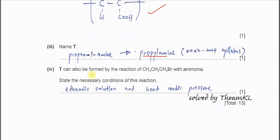T can also be formed by reaction of 1-bromopropane with ammonia. State the necessary conditions for this reaction. Ammonia is already given, this is a reactant. The condition including the solvent: we must use ethanolic solution, put ammonia inside ethanolic solution, and very special, this one: heat under pressure, not just heat, must heat under pressure. So it will form the T. That's all for this question, thank you.